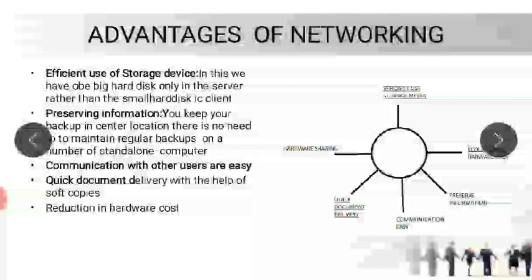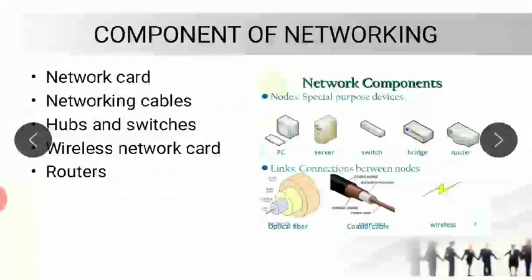Next is quick document delivery. Whenever we send any document through networking — for example, sending a document through WhatsApp — it takes only milliseconds. These are called soft copies when you are sending something digitally. Next are the components of networking: network card, networking cable, hub and switch, wireless network card, and router.